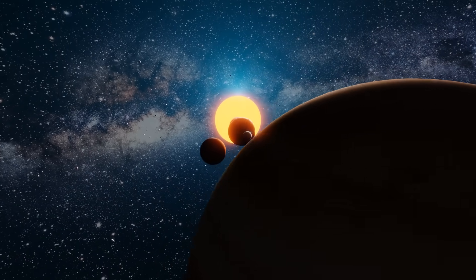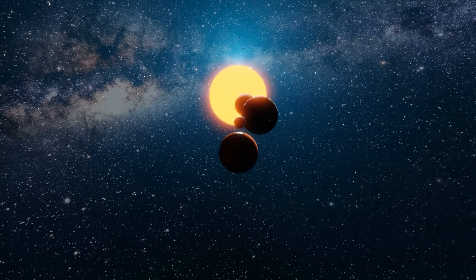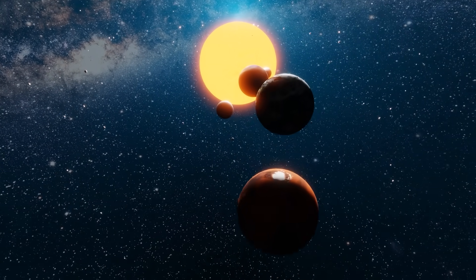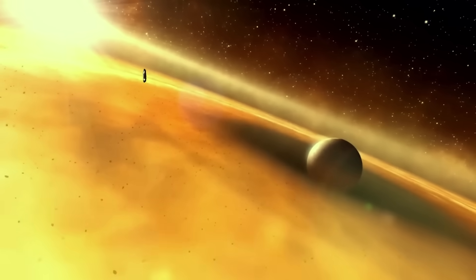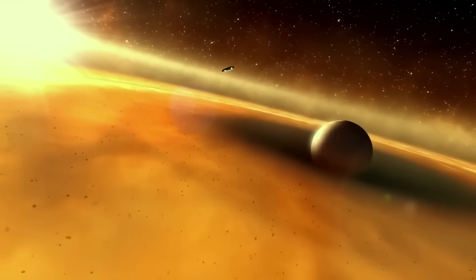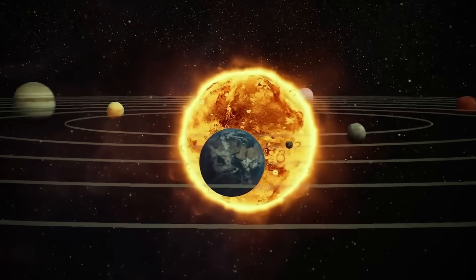Each hexagon represented an orbital resonance point, a harmonic alignment between planets, with one glaring difference. At the center wasn't the sun. It was empty. A void, precisely positioned where 3I Atlas now drifted.